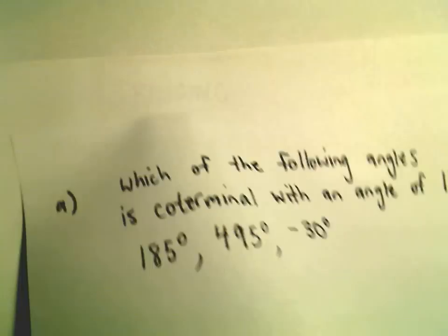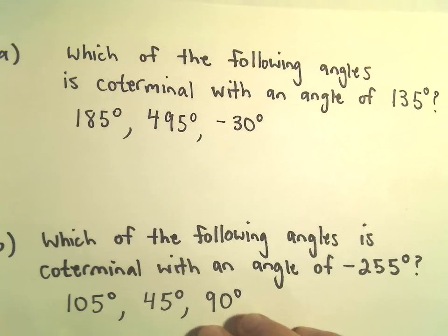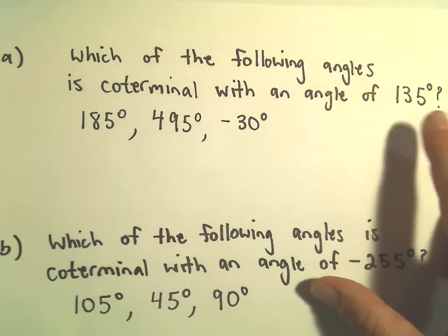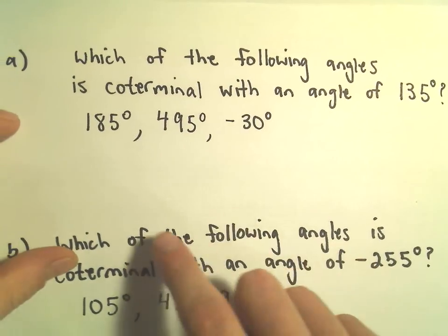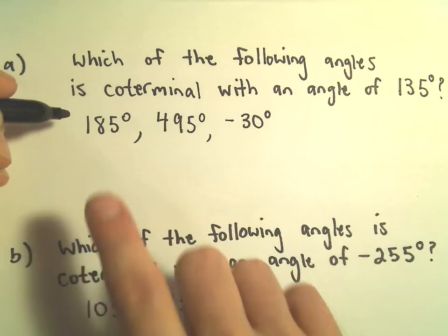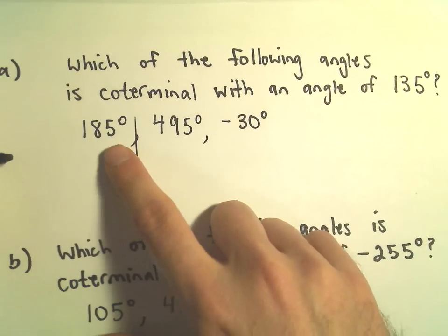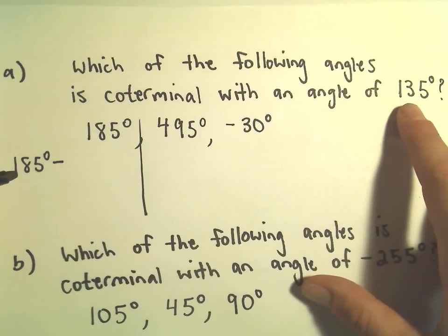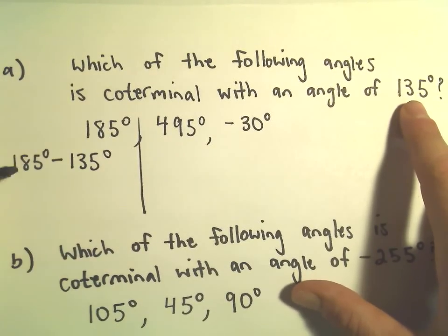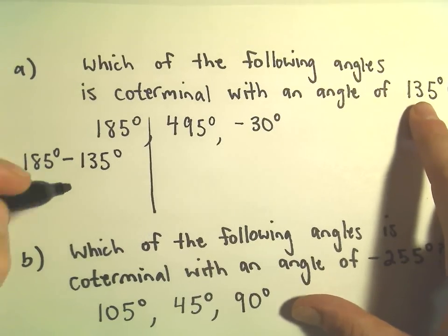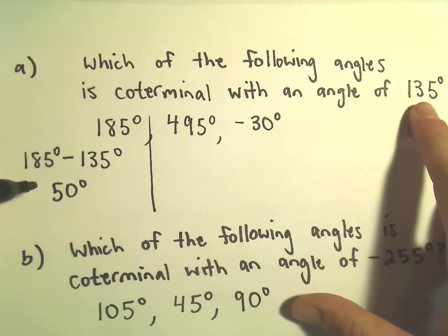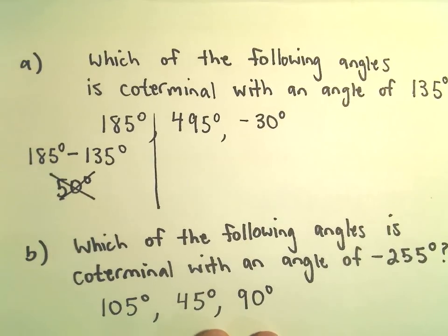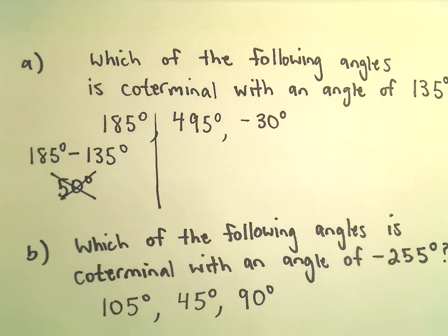Alright, so let's take a few examples here. Suppose we want to know in our first case, which of the following angles is coterminal with the angle of 135 degrees? It doesn't really matter the order in which you subtract them. So maybe let's check 185 degrees first. I'm going to take the bigger angle which is 185 and subtract away the smaller one, 135 degrees. So 185 minus 135, that's going to give me 50 degrees. And I think, well, is 50 degrees a multiple of 360? Definitely it's not, so those are certainly not going to be coterminal.